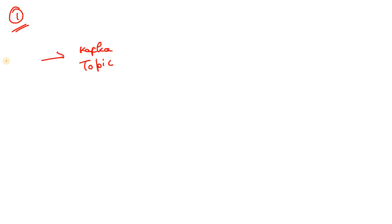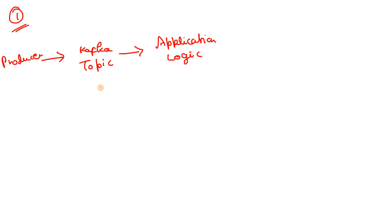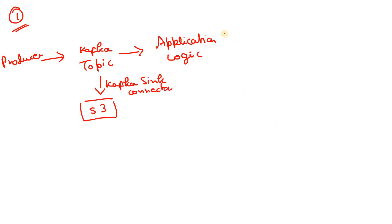Use case one: suppose we have a Kafka topic where our producer is publishing data in real time, and we have application logic which is consuming data in real time and serving business needs. For long-term storage and analytics purposes, we are writing the data using a Kafka sink connector to an S3 bucket. This system has been running fine in production for a long time.